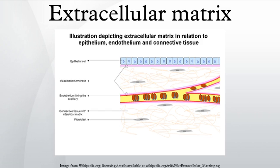Basement membranes are sheet-like depositions of ECM on which various epithelial cells rest. The plant ECM includes cell wall components, like cellulose, in addition to more complex signaling molecules. Some single-celled organisms adopt multicellular biofilms in which the cells are embedded in an ECM composed primarily of extracellular polymeric substances.